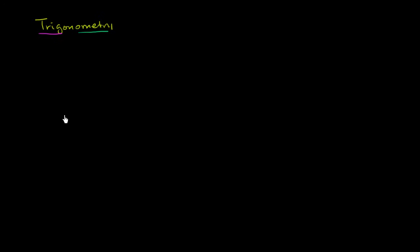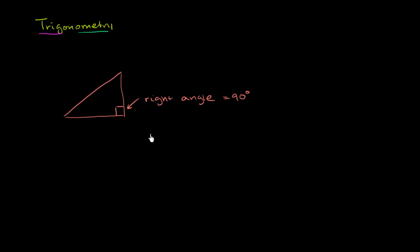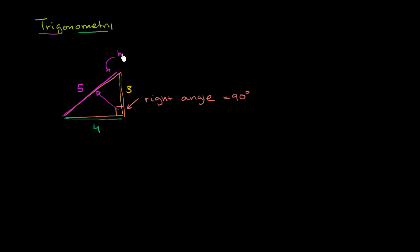Let me draw a right triangle. When I say it's a right triangle, it's because one of the angles is 90 degrees — this right here is a right angle. Let me put some lengths to the sides: this height is 3, the base is 4, and the hypotenuse is 5. You only have a hypotenuse when you have a right triangle — it is the side opposite the right angle and the longest side.